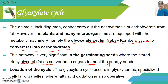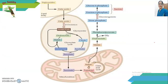The location of this cycle is the Glyoxysomes — specialized cellular organelles where fatty acid oxidation is also operative. Fatty acids move towards the Glyoxysomes, where they undergo beta oxidation, and after beta oxidation, Acetyl Coenzyme A is formed.